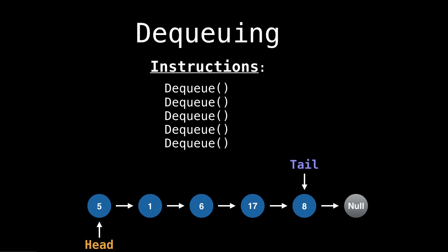Now, dequeuing is a bit of the opposite. Instead of pushing the tail forward, we're going to be pushing the head forward. So push the head forward one, and then the element that was left over was the one we wanted to dequeue and return to the user.